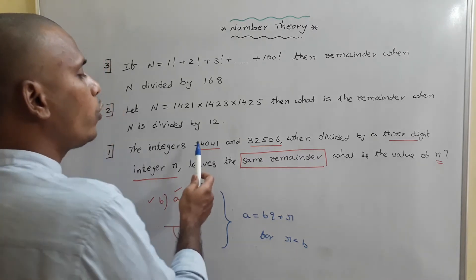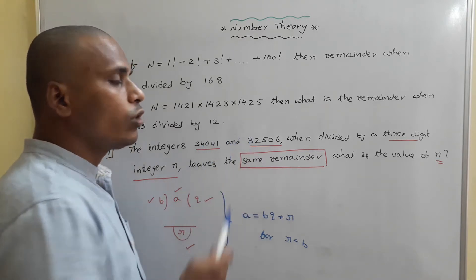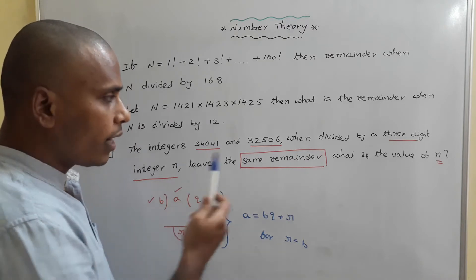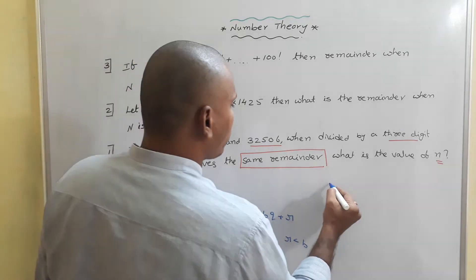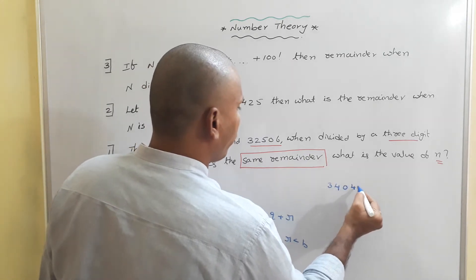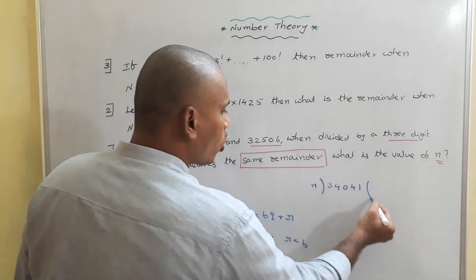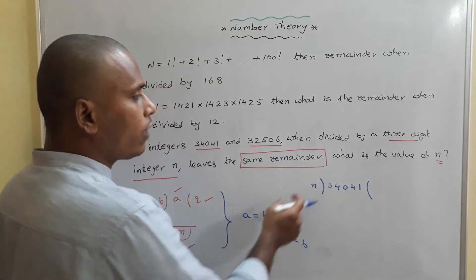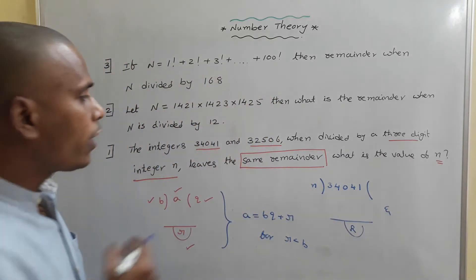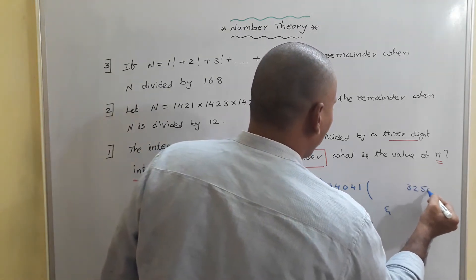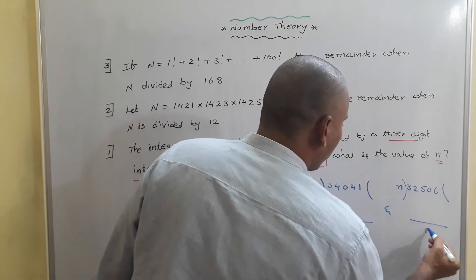Now I am going to use this idea to find the value of n. Once again, we have two integers: 34,041 as well as 32,506. We are going to divide these two integers by a three-digit integer n, which leaves the same remainder. So we need to find out the value of n. The first number is 34,041. When we divide this 34,041 by a three-digit integer n, it leaves some remainder — let's call it r.